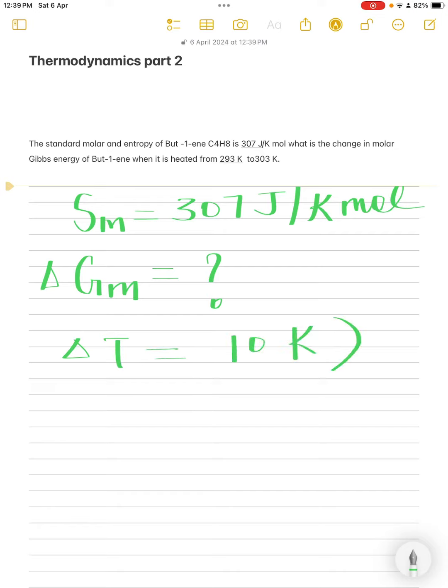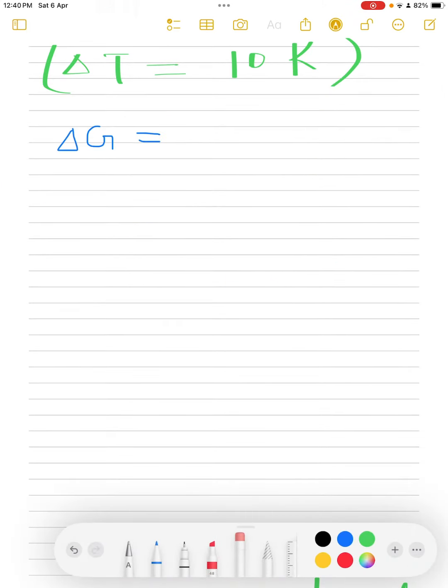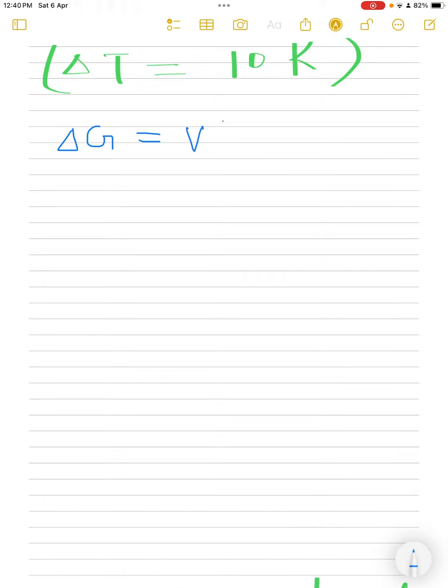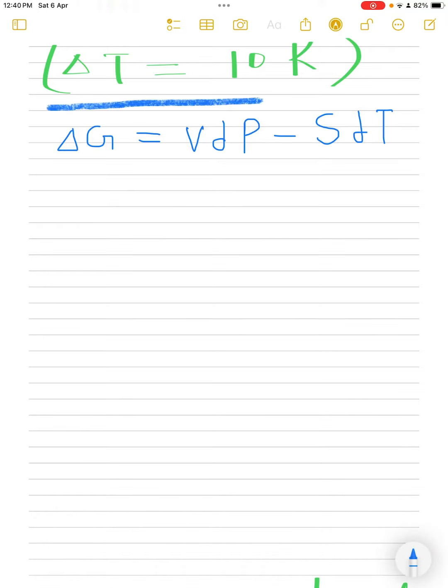As you know, there is a famous formula which is delta G equals V dP minus S dT. You can find out this formula by using Maxwell square, which is a famous magical square.